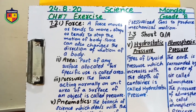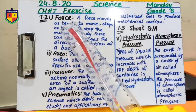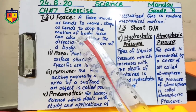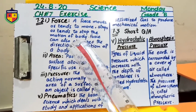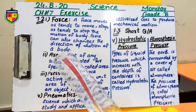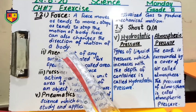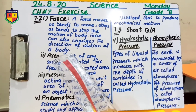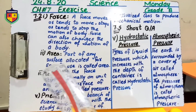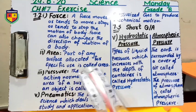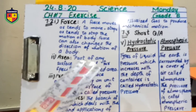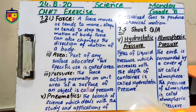Define Force: Force is that which can change the state of a moveable body. Next point is Area: Part of any surface allocated for specific use is called Area.